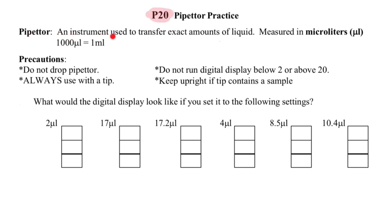So, pipetter is an instrument which is used to transfer exact amounts of liquid, measured in microliters. 1000 microliters equals one milliliter.